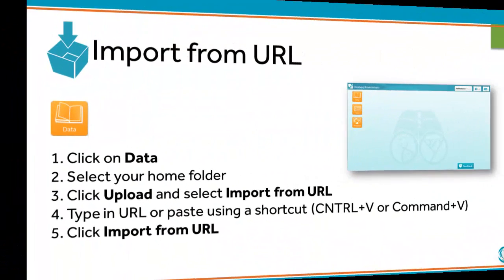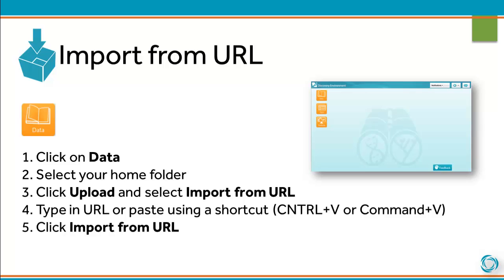To import using a URL, click on Data, select your home folder, click Upload and select Import from URL. Type in the URL or paste using a shortcut. Finally, click Import from URL.